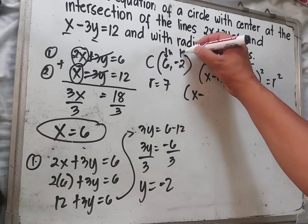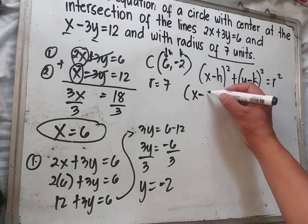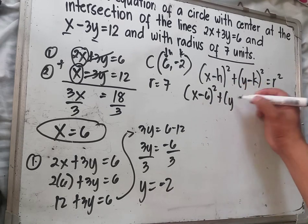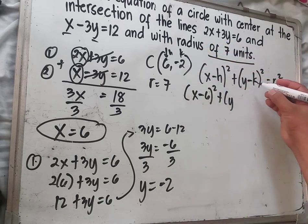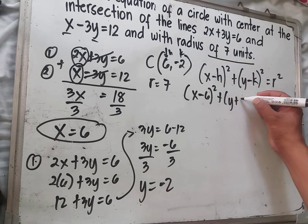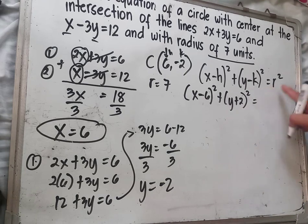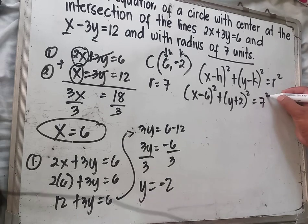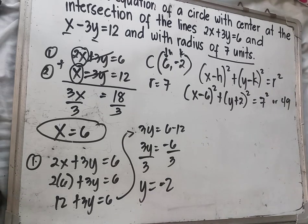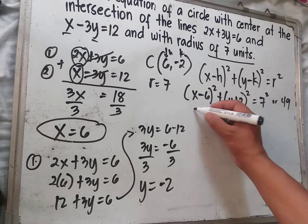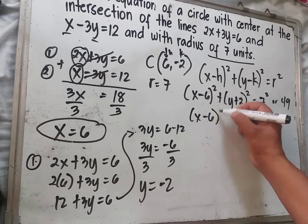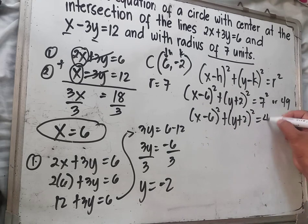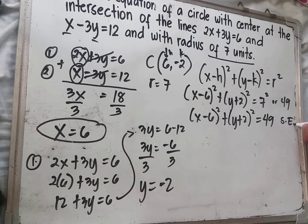Using the standard equation of a circle — x minus h squared plus y minus k squared equals r squared — we substitute h equals 6 and k equals negative 2. So that is x minus 6 squared plus y minus negative 2 squared equals 7 squared, which gives x minus 6 raised to 2 plus the quantity y plus 2 raised to 2 equals 49. That is the standard equation.